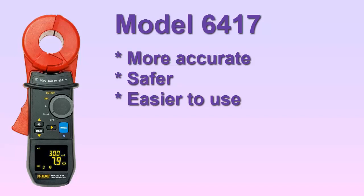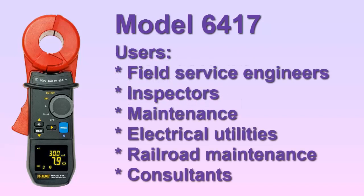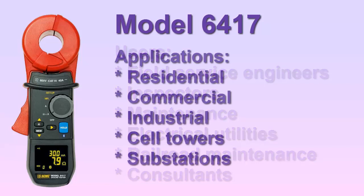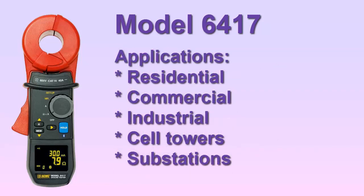Users of the Model 6417 include field service engineers and technicians, inspection personnel, facility maintenance electricians, electrical utility staff, railroad maintenance engineers, and consultants. Typical applications include checking the grounding electrode system for residential, commercial, industrial, and other facilities, as well as cell towers and small substations.